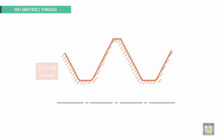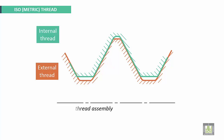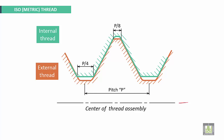For isometric threads, this is the external thread and this is the internal thread. This is the center line of the thread assembly. Here we have P over 8 for pitch, pitch over 4, and the total pitch P. For isometric threads, there is a 60-degree angle.